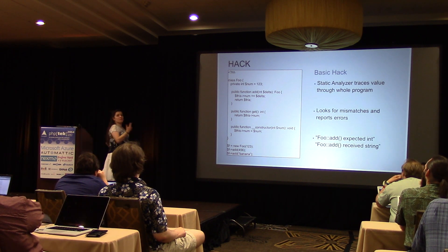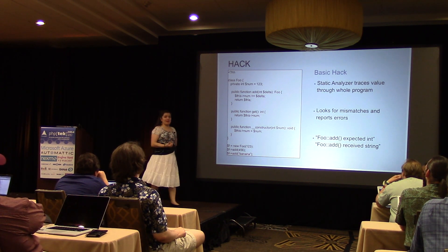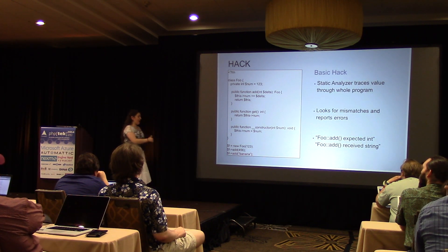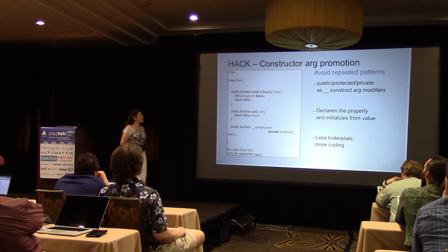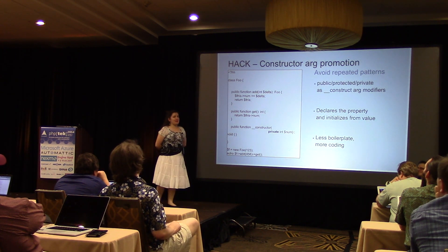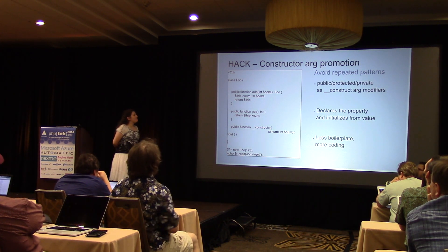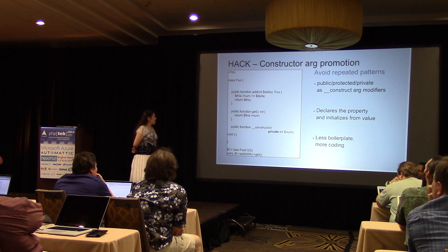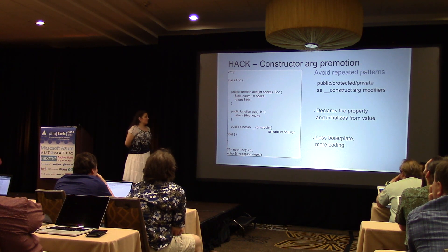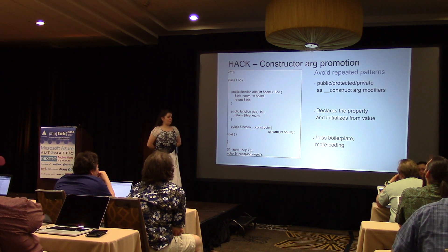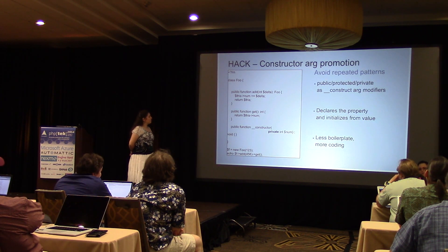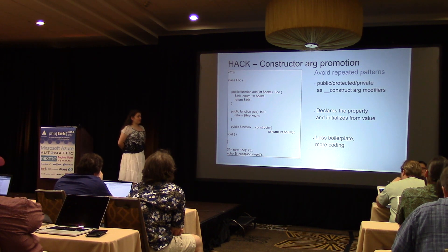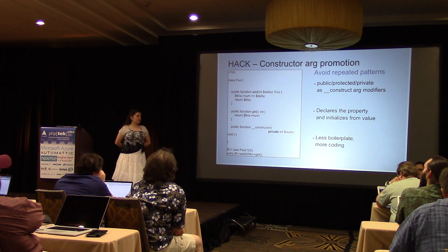Basically all the strict typing stuff means it absolutely has to be an int, or it has to be a string, and it's going to yell at you. My favorite is constructor argument promotion. You don't need to define the property at the top of the class — you define it within the arguments for the constructor. Normally inside the constructor you'd take each argument and assign it to the property; here it just happens automatically. It's huge amounts of boilerplate code going away.